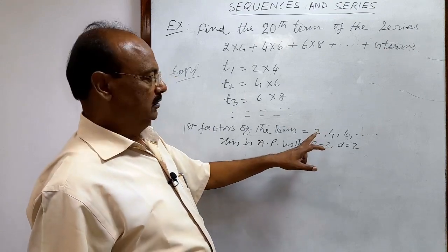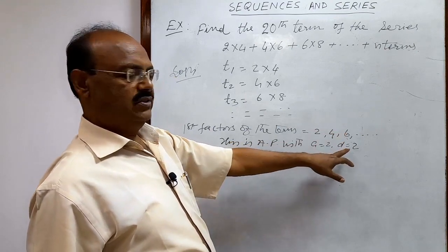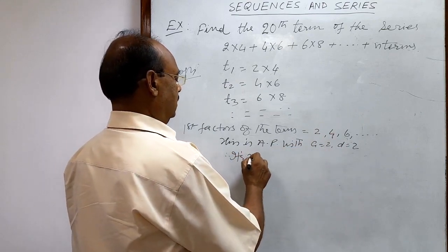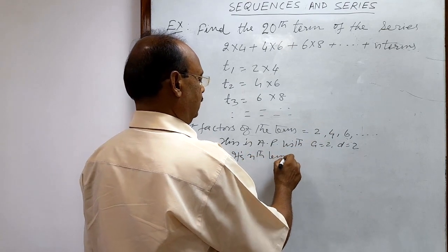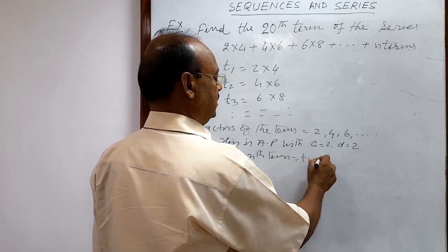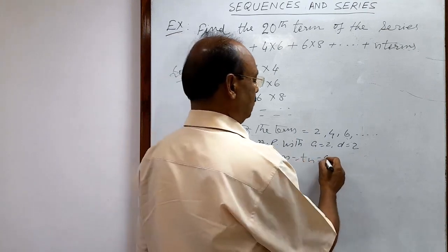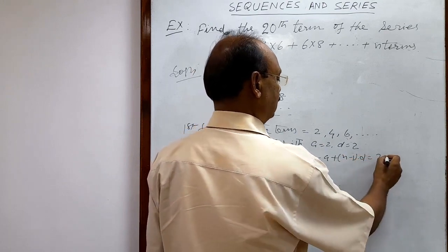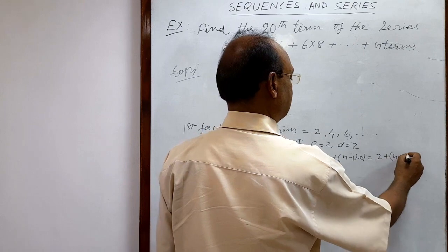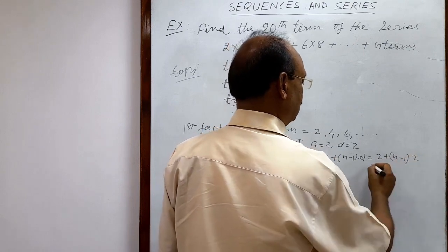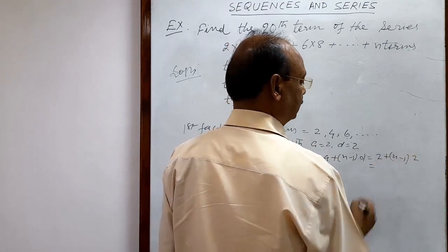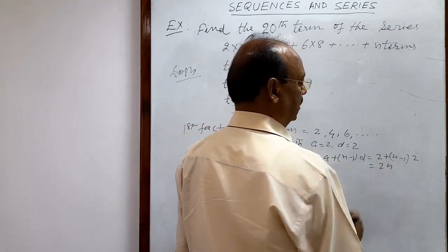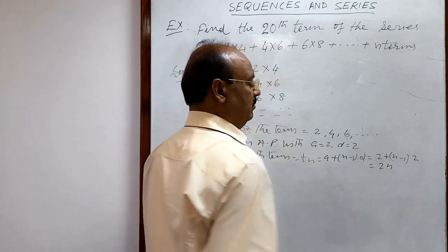2 + 2 = 4, 4 + 2 = 6, so the common difference is 2. The nth term of the first factors is: Tₙ = a + (n−1)d = 2 + (n−1)×2, which simplifies to simply 2n, because +2 and −2 cancel out.